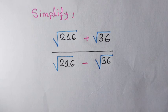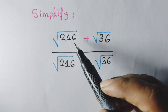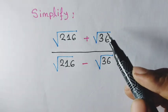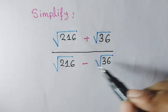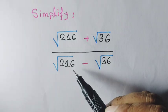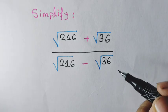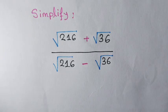Hello students, welcome. Let's solve a nice square root problem: (√216 + √36) / (√216 - √36) = 4. Let's see the solution.